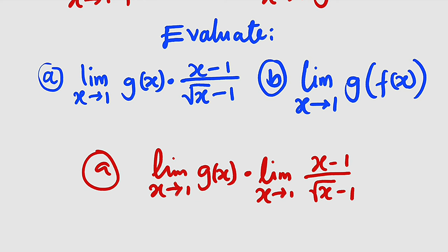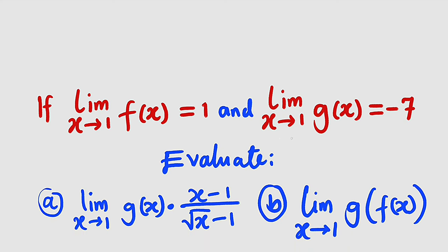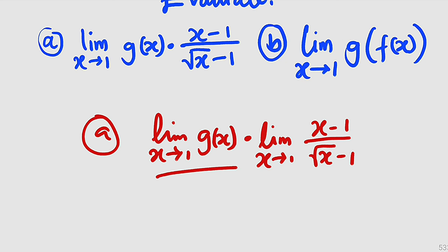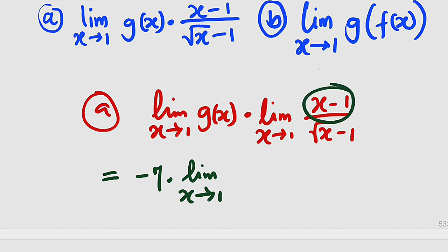But this is given already from the question, because it stated that the limit as x approaches 1 of g of x is equal to negative 7. And hence, we can replace this with negative 7. So this is equal to negative 7 multiplied by the limit as x approaches 1 of... We can rewrite x as square root of x whole squared.